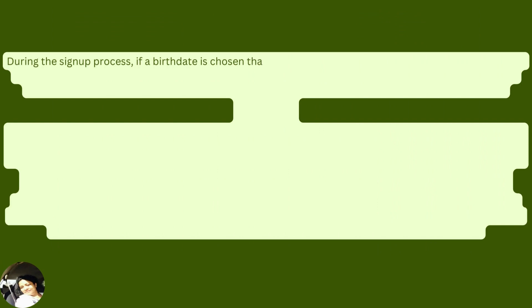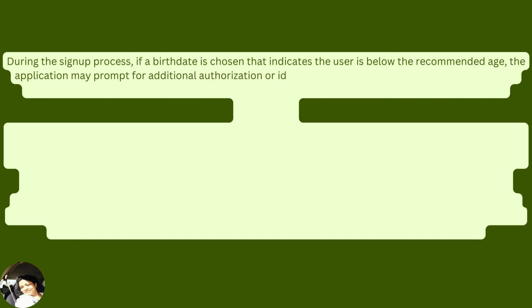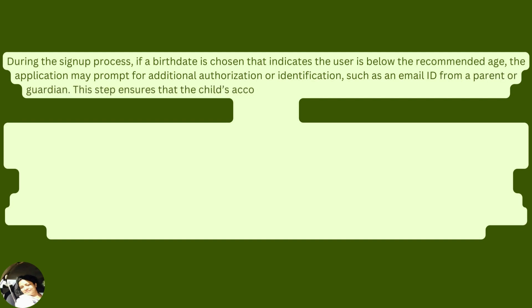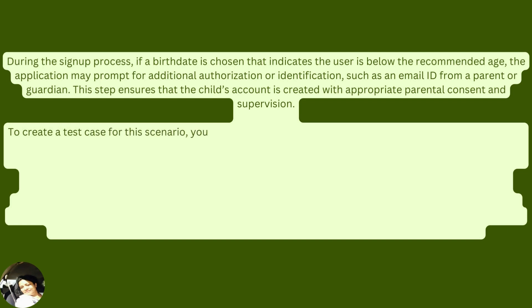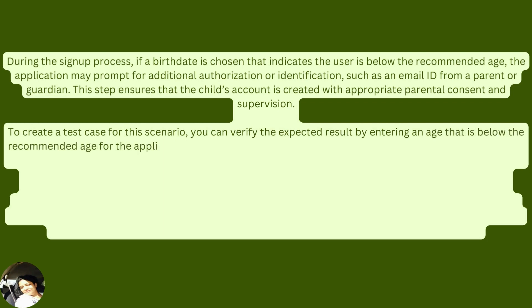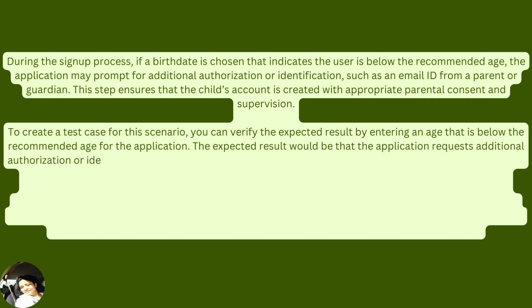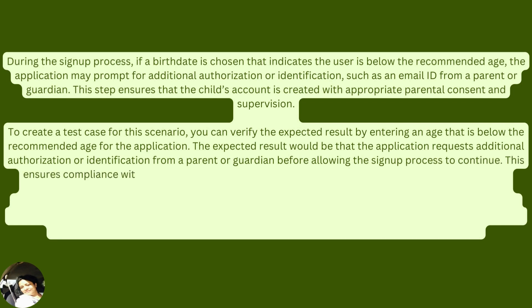If the age is valid, the user can proceed with registration. If it doesn't meet the criteria, the user typically sees an error message indicating they do not meet the age requirements. For this prototype template, the minimum age is 9 years old and the maximum age limit is 113 years. Anyone younger than 9 or older than 113 would not be allowed to register. If a birth date indicates the user is below the recommended age, the application may prompt for additional authorization, such as an email ID from a parent or guardian.